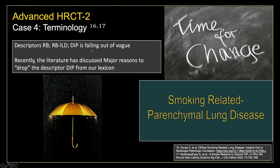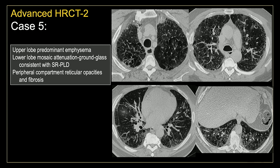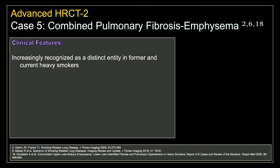Our last case is a 57-year-old man, heavy smoker, smoking two packs a day for the last 25 years, referred by primary care for increasing dyspnea. On his CT, we see an upper-lobe predominant pattern of emphysema and a lower-lobe mosaic attenuation parenchymal pattern with patchy areas of ground glass — what we formerly called DIP and now lean toward calling smoking-related parenchymal lung disease. There are abnormal reticular opacities, areas of bronchiolectasis and fibrosis. This constellation of imaging findings is what we expect to see with combined pulmonary fibrosis and emphysema syndrome.